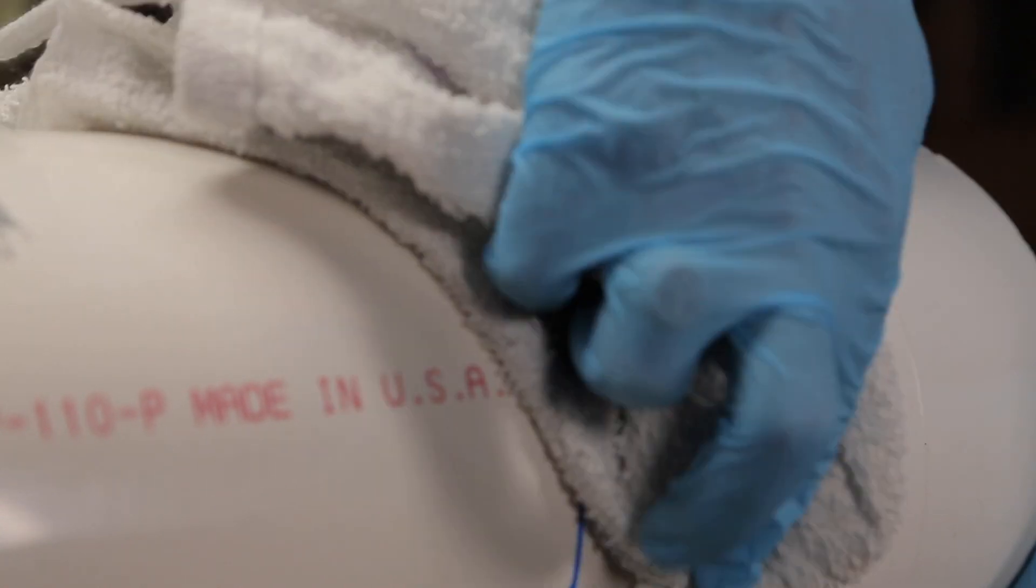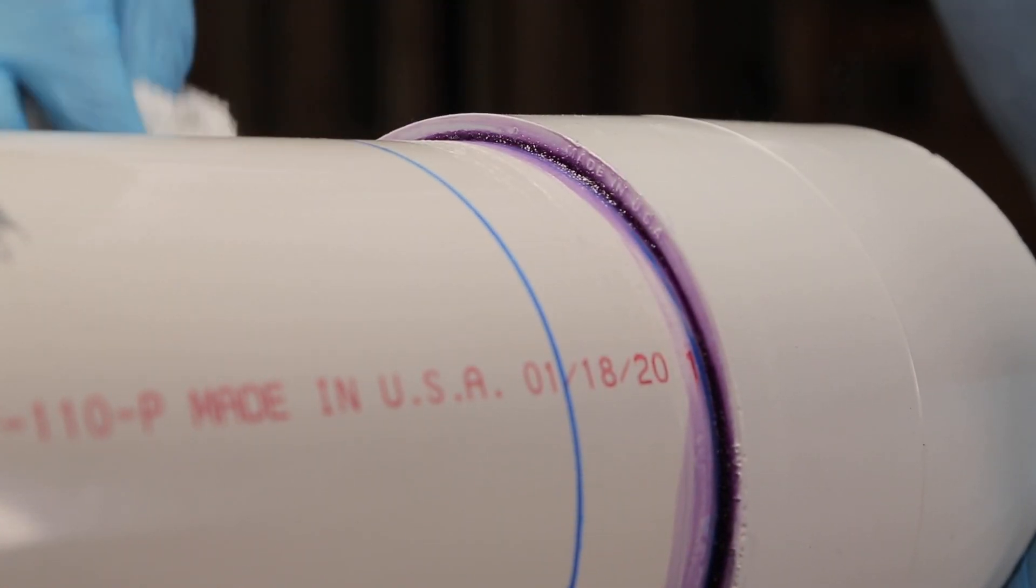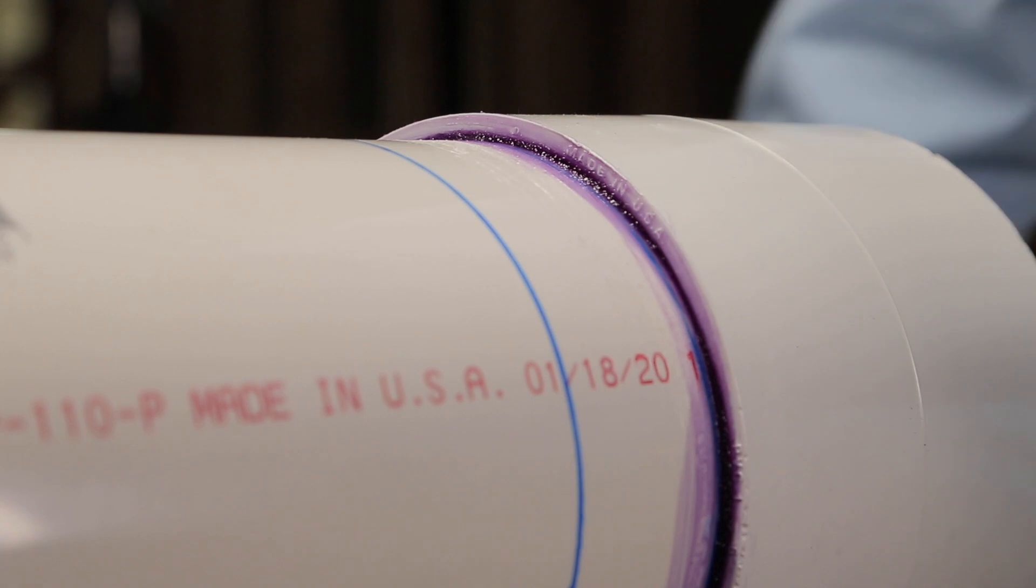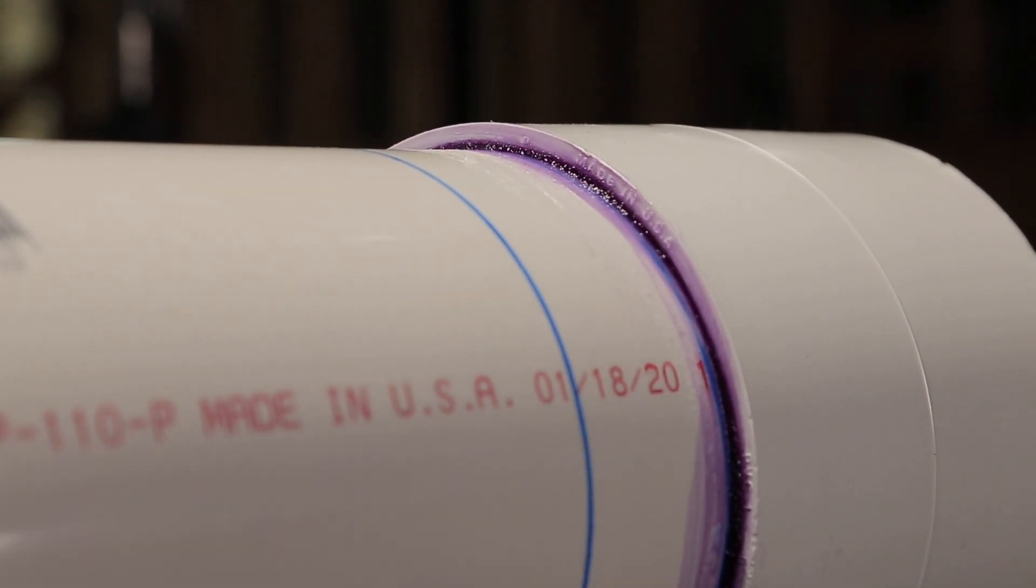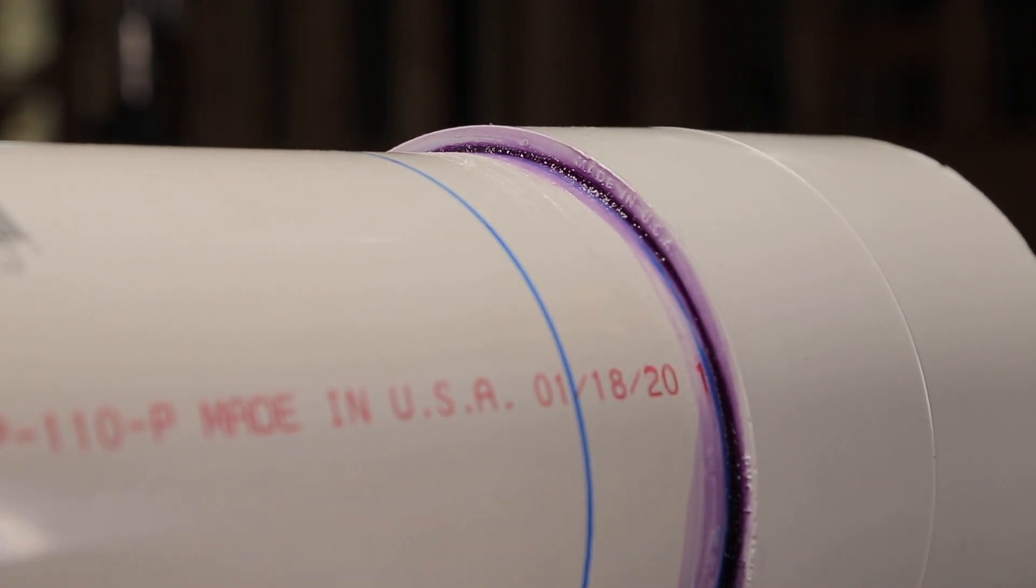Lastly, remove excess cement from the joint. A properly made joint will show a continuous bead of cement around the perimeter. If you see gaps, you might not have applied enough cement and the joint may fail.